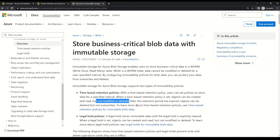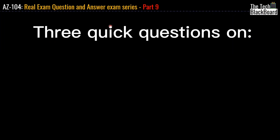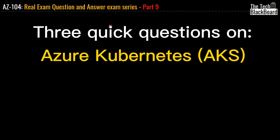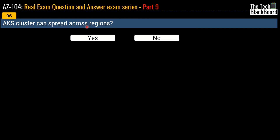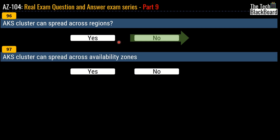Links to this page and all other documentation referenced in this video will be in the description box. Now we have three rapid-fire questions on Azure Kubernetes. Question 96: can an AKS cluster be spread across multiple regions? The answer is no — you cannot spread an AKS cluster across regions. That is a very important point when working with Azure Kubernetes clusters. Question 97: can an AKS cluster spread across availability zones? The correct answer is yes — you can spread an AKS cluster across availability zones.